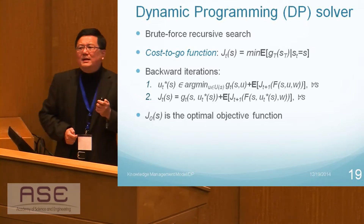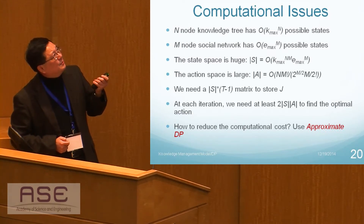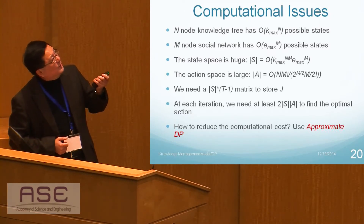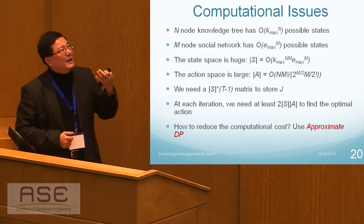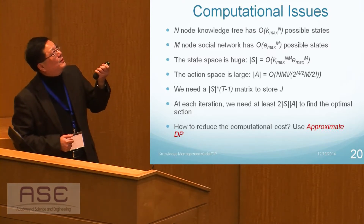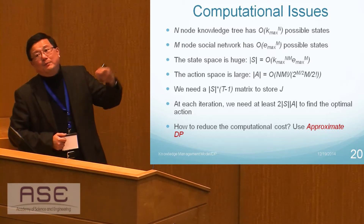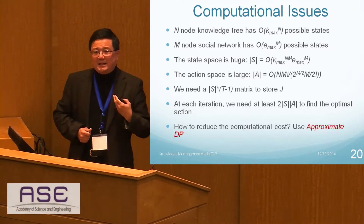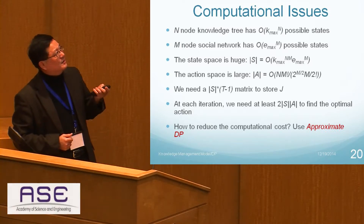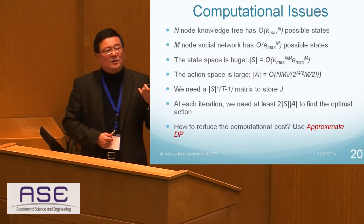The big problem is the computational issue — it is very computationally intensive. Even with a very limited number of personal knowledge nodes and a very small social network, the possible actions, states, and evolution of those states are huge and tremendous. That is why we have to design a more effective algorithm.